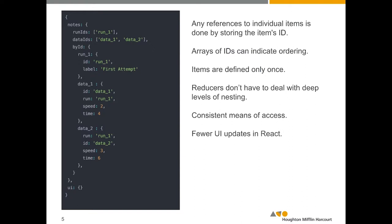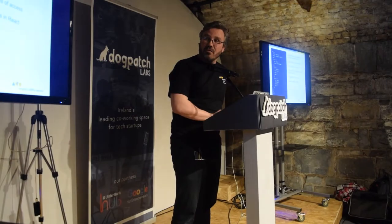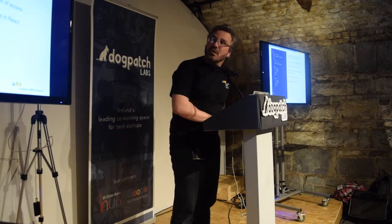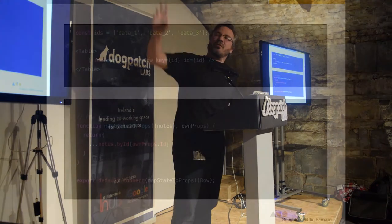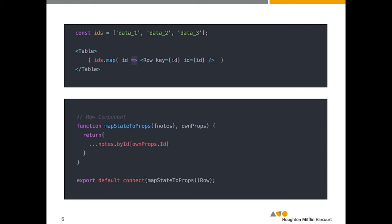Reducers, if you've ever used Redux, are a nightmare if you have to nest them — they just become really messy very quickly. You have a consistent means of access; in my case, notes by ID, and you pass the ID of the object. By following this, you basically end up with a lot fewer UI updates in React. Most of the time you're passing around arrays of strings, and it's only when you get to actually rendering a piece of data that you get a one-to-one relationship with the data object and the component that renders it. This makes it a lot easier to test that component and make it reusable.